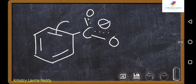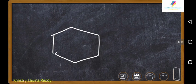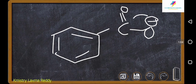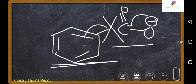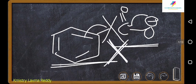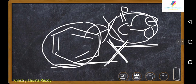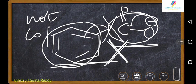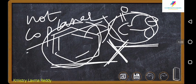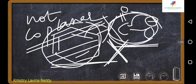But this electron pair participation is not possible. That means from benzene side, you don't expect any electrons flowing from this side to this side — between the benzene ring and carboxylate. There is no resonance between them because they are not in the same plane. They are not coplanar. So don't expect any resonance between the benzene ring and carboxylate.